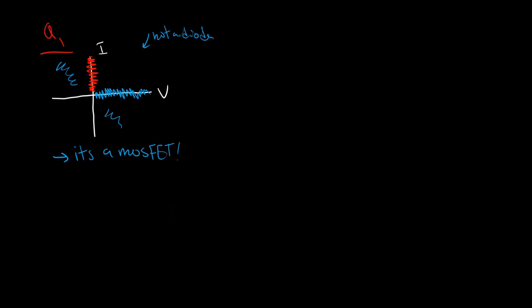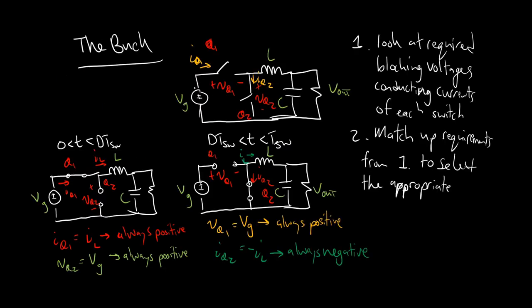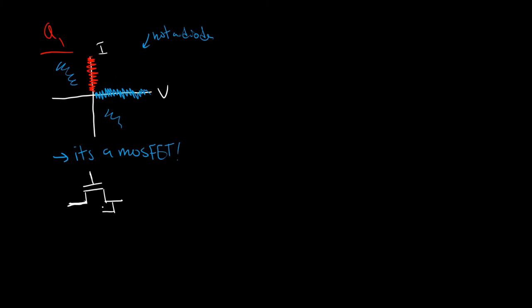The MOSFET can do a little bit more than what we need — the current can float backwards in the MOSFET — but it's within its capabilities, so if we use a MOSFET it's going to work. The voltage points toward Vg, so if it's blocking positive voltage, we need the body diode to point toward Vg when it's off. That means the body diode needs to point this way, which means that's the source. So this is the MOSFET we need for Q1.